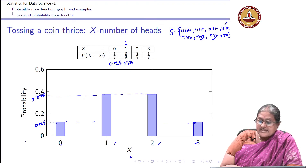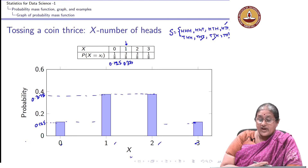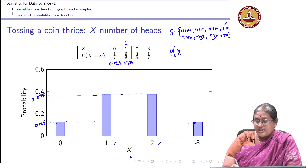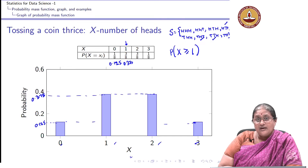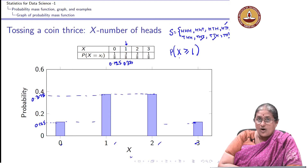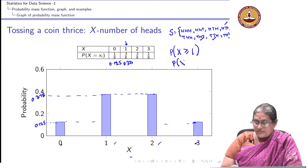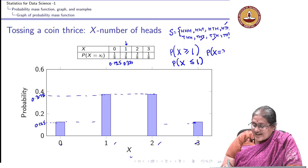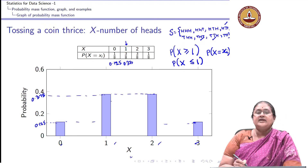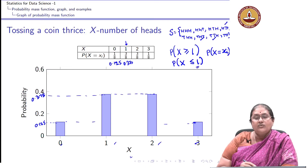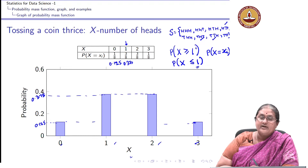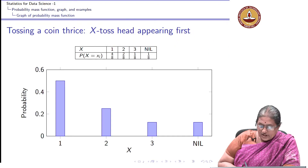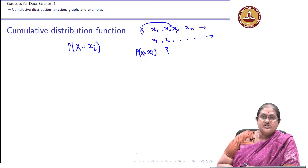Now suppose we are interested in asking: what is the chance of getting at least one head? We translate this as P(X ≥ 1). Or we could ask: what is the chance of getting at most one head in 3 tosses? That translates to P(X ≤ 1). So instead of asking what is the chance of X taking a particular value, we might want to know the chance of X being less than or equal to, or greater than or equal to, a particular value.